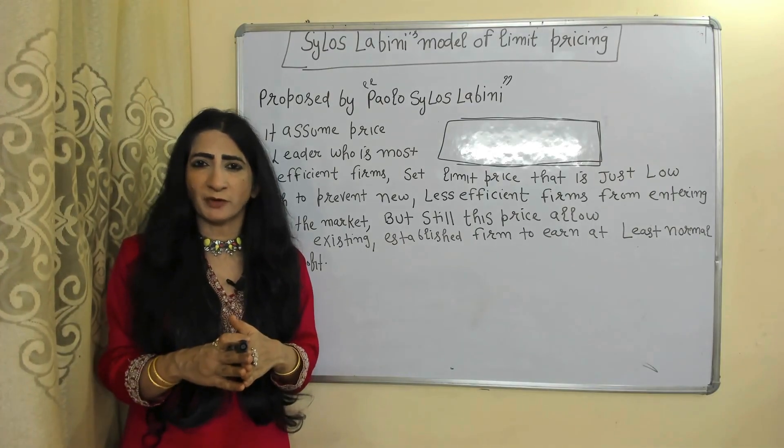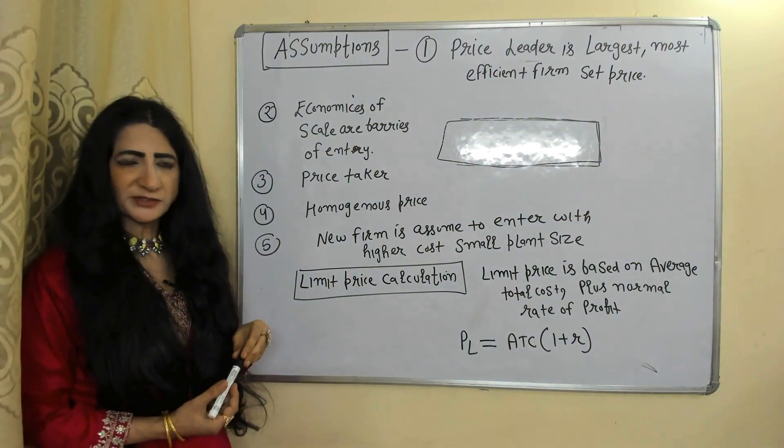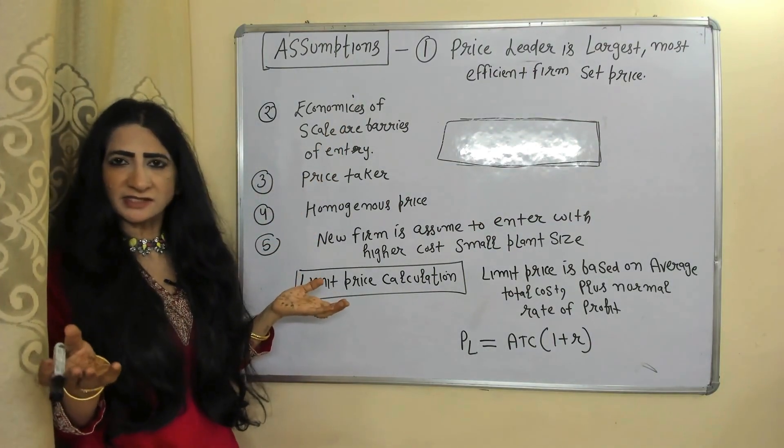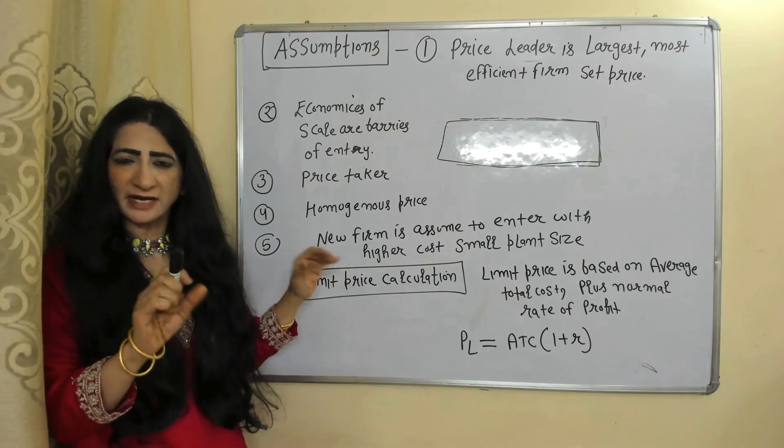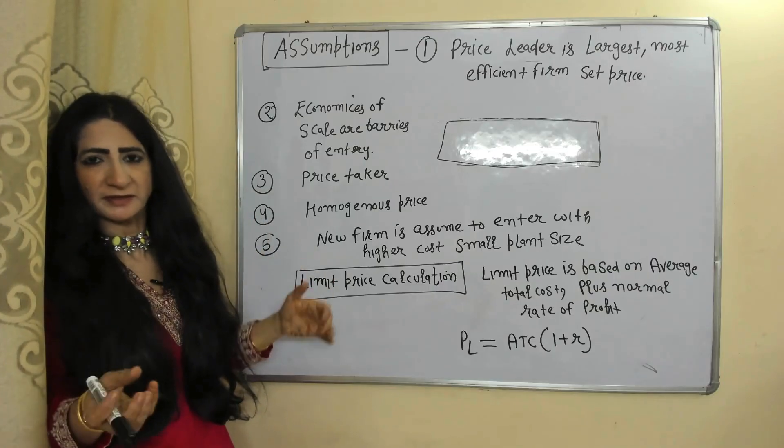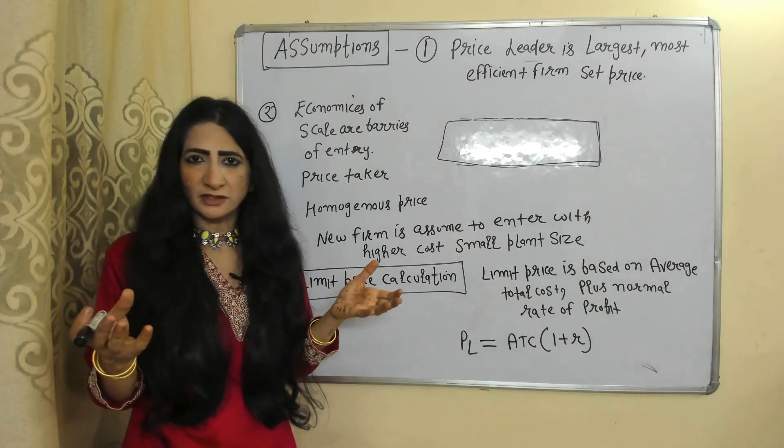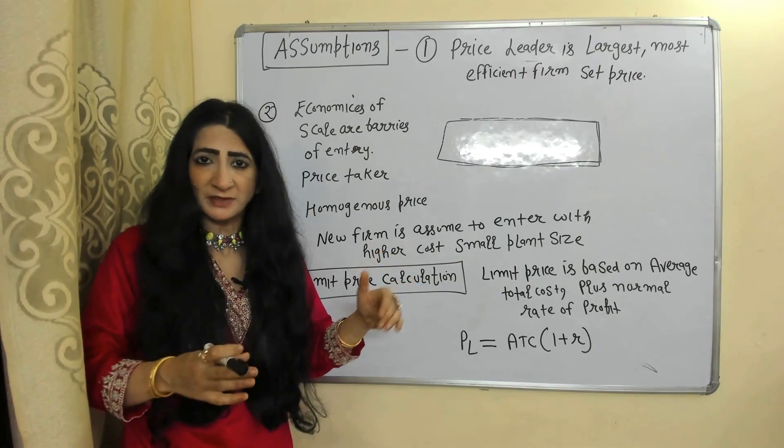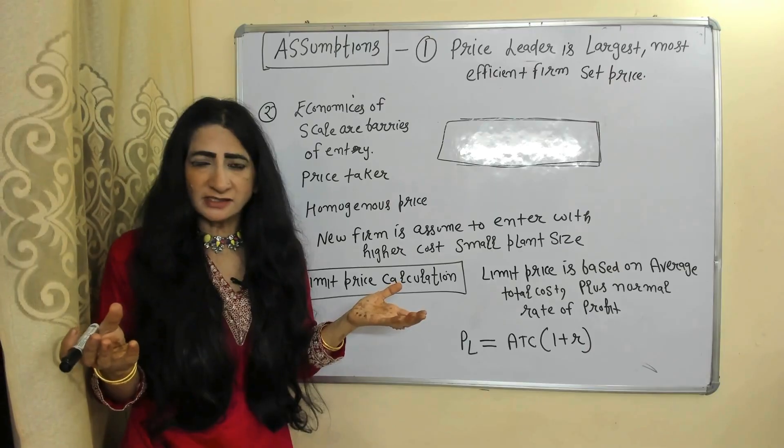Assumptions: Price leader is largest and most efficient firm and decides the price. Economies of scale are barriers of entry. That means a new firm will start from small scale.